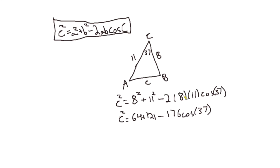Now what's 176 cosine 37? Well, let's actually add this up first. 64 plus 121 is 185 minus this value. So I would just plug this into the calculator. Make sure you're in degrees again. 185 minus, parentheses, 176 cosine 37.